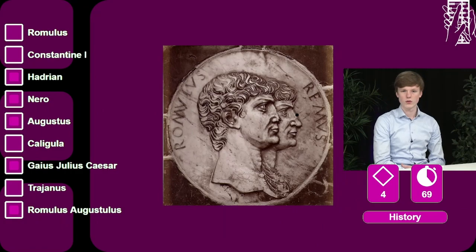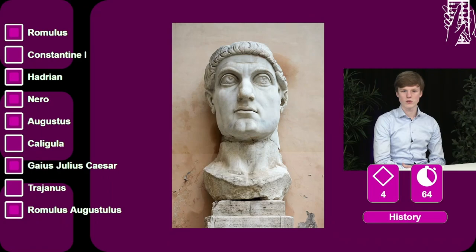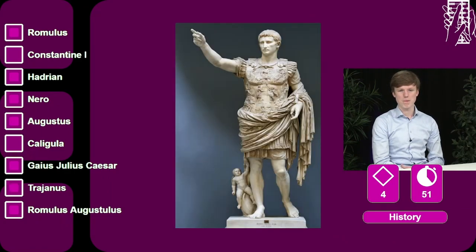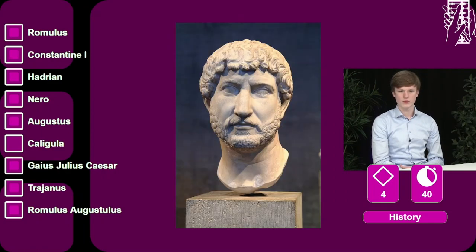He is the legendary founder and the first king of Rome. Romulus. He was the first emperor to convert to Christianity and to allow Christianity as a religion through the Edict of Milan. That's Trajan. Adoptive son of Caesar, he was the first emperor of Rome. That's Augustus and where I said Augustus is Constantine I. This emperor is most famous for trying to conquer England and for constructing there a wall named after him.